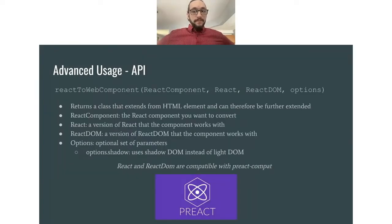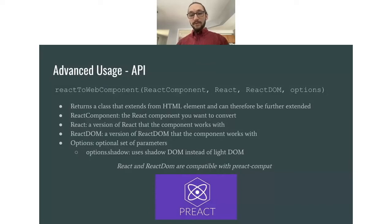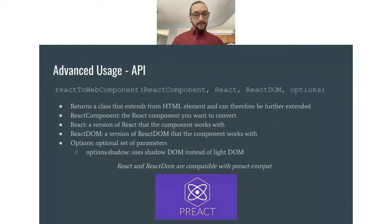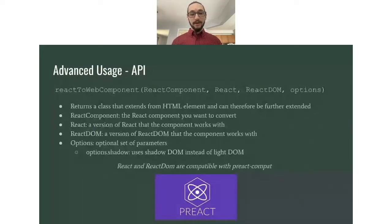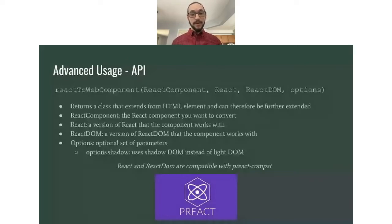The core of React to Web Component is the `reactToWebComponent` function, which accepts a React component, React, ReactDOM, and some optional options. What is returned is a class that extends from `HTMLElement` and can be further extended if you wish to add functionality. You need to pass in whatever version of React and ReactDOM your component is working with. The only optional parameter currently is the `shadow` parameter, which allows you to render a shadow DOM instead of a light DOM.